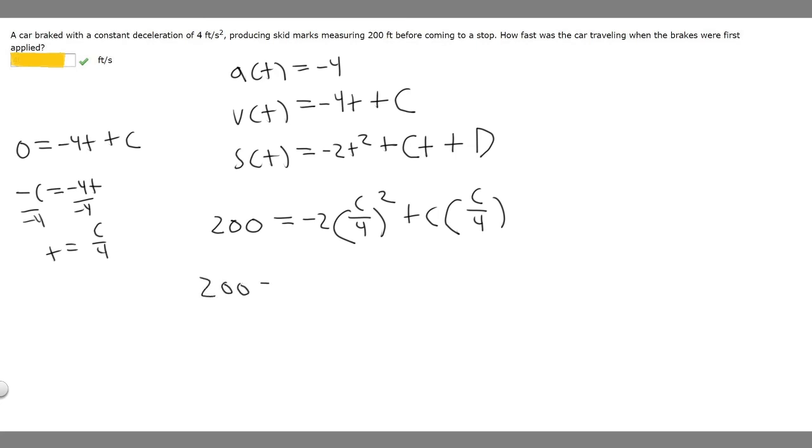Let's solve. 200 equals minus 2 times C squared over 16 plus C squared over 4. Simplifying, minus 2 times C squared over 16 is just minus 1 over 8 C squared plus C squared over 4. I'm going to remove all the fractions by multiplying both sides by 8, so 1600 equals minus C squared plus 2 C squared.